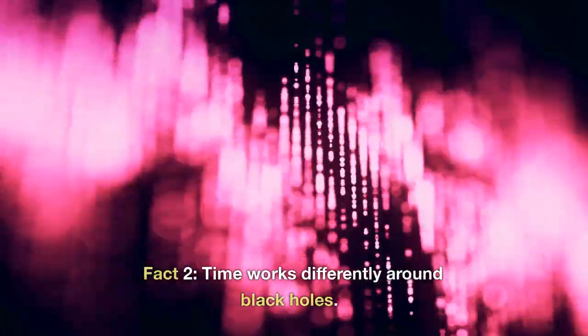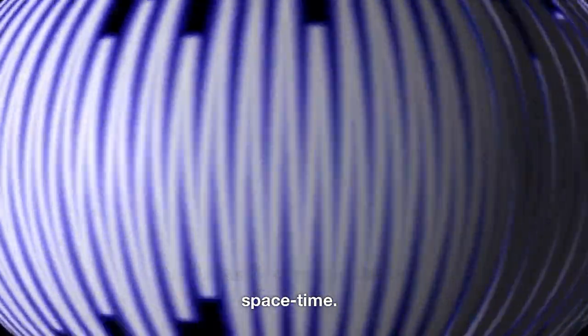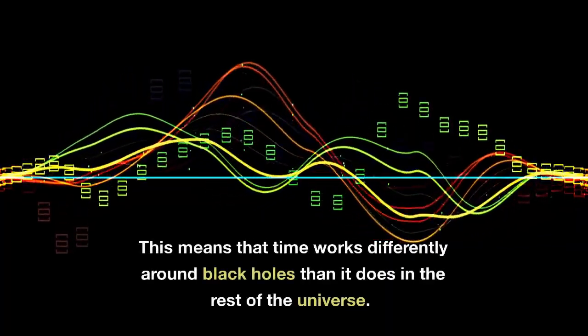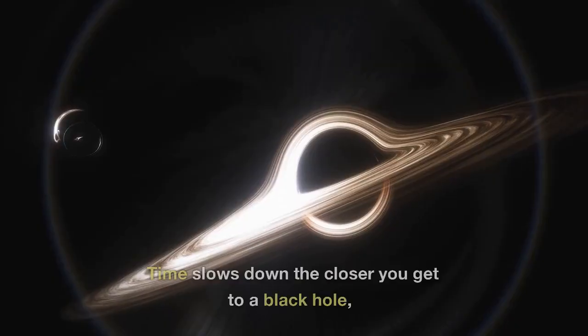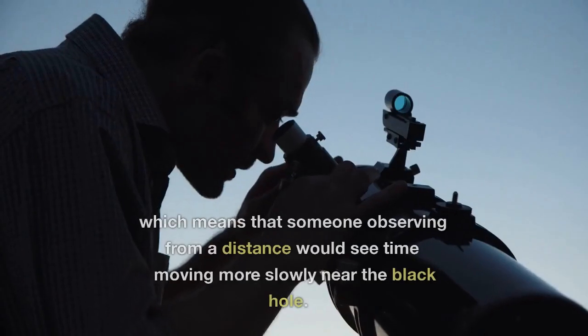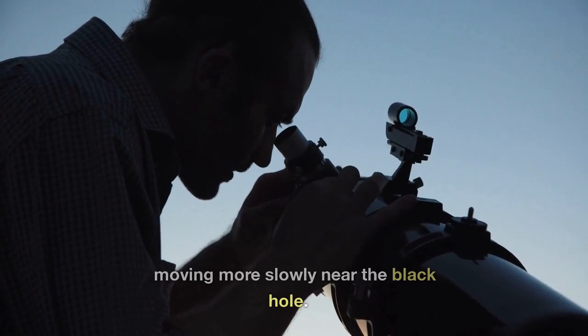Fact 2. Time works differently around black holes. Black holes are so massive that they can actually warp the fabric of spacetime. This means that time works differently around black holes than it does in the rest of the universe. Time slows down the closer you get to a black hole, which means that someone observing from a distance would see time moving more slowly near the black hole.